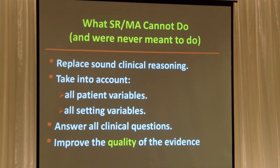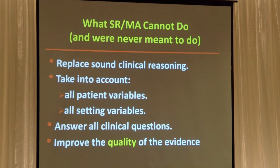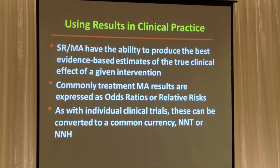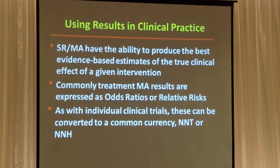Meta-analyses primarily increase the precision of your effect size estimate. How much does early anticonvulsant therapy in patients with first seizures reduce the risk of seizures? They take that estimate from broad to narrow — they increase the precision. They don't improve the quality of the evidence that goes into them. But if done properly, you have a document that provides your best evidence, and if done quantitatively you get a number — an odds ratio or relative risk — that you can translate into number needed to treat for use in the clinic.